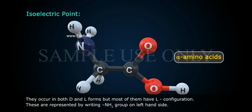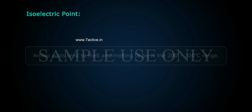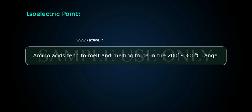They occur in both D and L forms, but most of them have L configuration. These are represented by writing the NH₂ group on the left-hand side. Amino acids are colorless, non-volatile crystalline solids having a sweet taste, and their melting points are typically in the range of 200°C to 300°C.